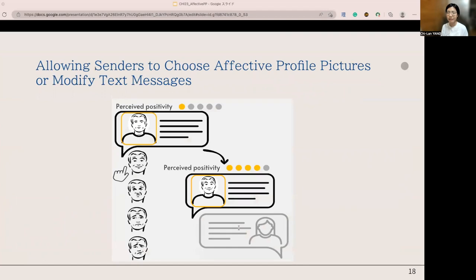Based on the finding that incongruent expression would distort the interpretation of positive messages, our study suggests that system designers could allow message senders to select the affective profile pictures based on the emotion they intended to send or suggest users to modify the tone of the message when it was detected as too negative.